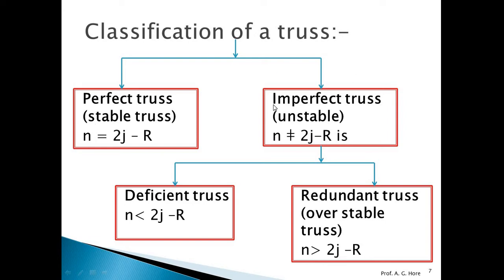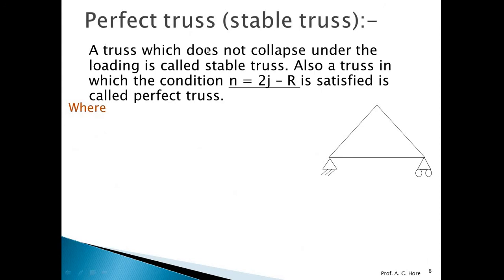MCQs of one mark type may be asked on these different types of trusses — for example, when the equation n = 2j − r is satisfied, which type of truss is it? The answer is a perfect truss. Vice versa, these types of MCQs may appear in exams.